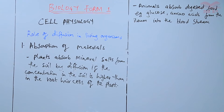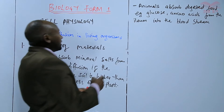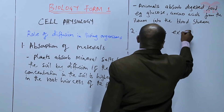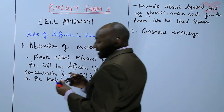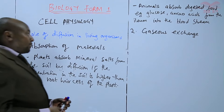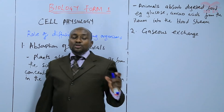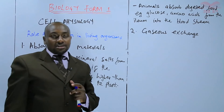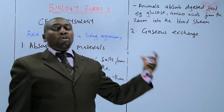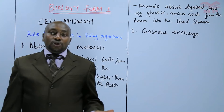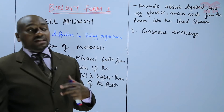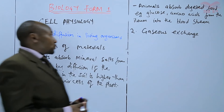The second role of diffusion is with respect to gaseous exchange — gaseous exchange in plants and animals. For example, plants during the day take in carbon dioxide for photosynthesis, but at night they mainly take in oxygen for respiration. So the taking in of gases — carbon dioxide and oxygen — occurs by diffusion.